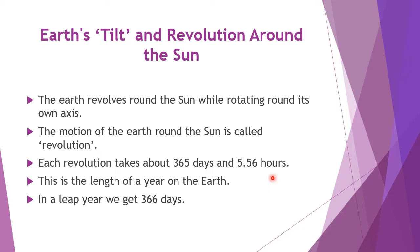Every 4 years we get a leap year. This year is 2020, which is a leap year — we got 29 days in February, one extra day. In a leap year, we get 366 days — that means one day extra. This is the length of the year on earth; whatever time it takes for one revolution is the length of the year.